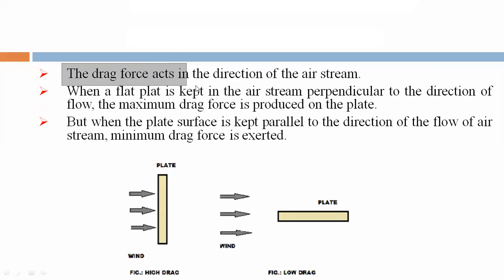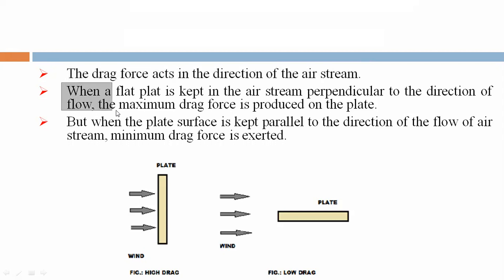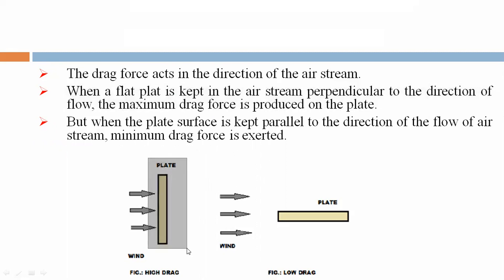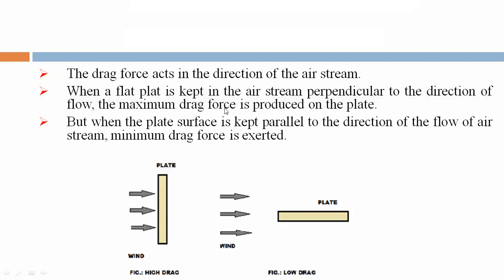The drag force acts in the direction of the air stream. When a flat plate is kept in the air stream perpendicular to the direction of flow, the maximum drag force is produced on the plate. This perpendicular plate arrangement with wind air flow produces maximum drag force.